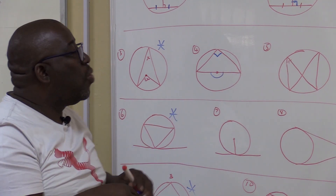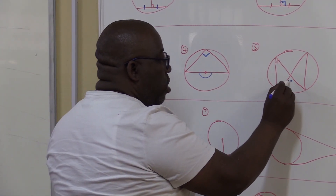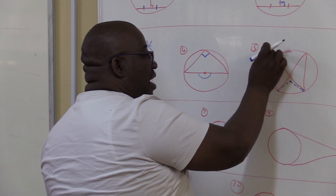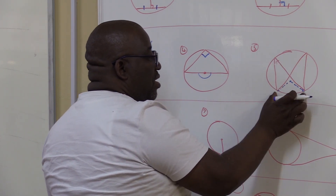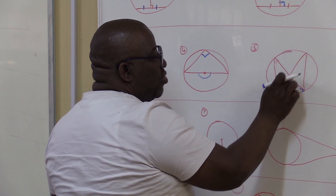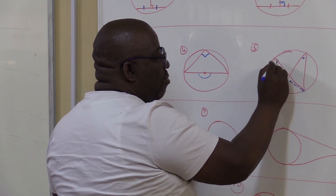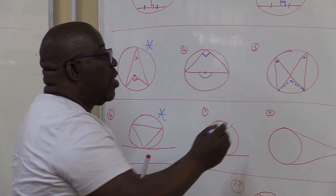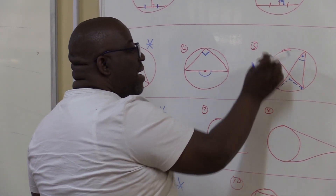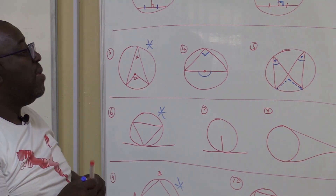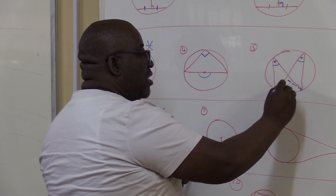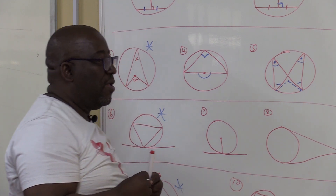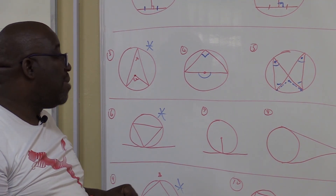When you prove these theorems, you need to create a center. This one will be equal to that one — angles in the same segment are subtended by the same arc or chord. Those three theorems all have something to do with the center.